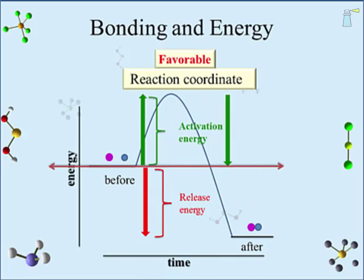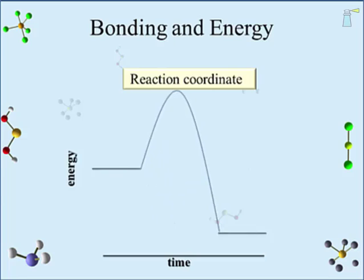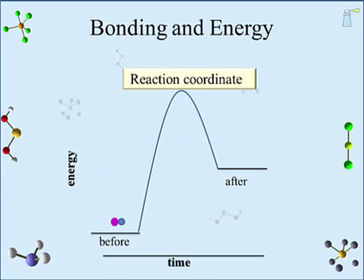There are other arrangements for reaction coordinates that reflect different levels of energy and different directions for a reaction. We can reverse this reaction — having bonded atoms as the reactants, which undergo a chemical reaction that breaks the bonds, leaving individual atoms as the products. From this perspective, energy has to be added to or consumed by the reaction for the bonded atoms to break apart. That energy consumed is the same size as the energy released in the other direction, as required by the law of conservation of energy.